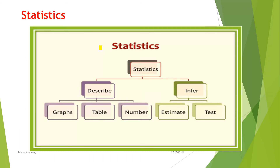To summarize: statistics is divided into two areas — descriptive statistics and inferential statistics. Descriptive statistics is based on graphs, tables, and numbers: first we collect data, organize it, summarize it, and present it. Inferential statistics, on the other hand, is based on estimation and hypothesis testing.